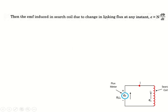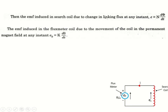The EMF induced in the search coil, Ec, at any instant is given as: Ec = N × dΦ/dt. The EMF induced in the flux meter, Ef, is given as: Ef = K × dθ/dt, where K is the constant of the flux meter which depends upon the dimensions of the instrument.